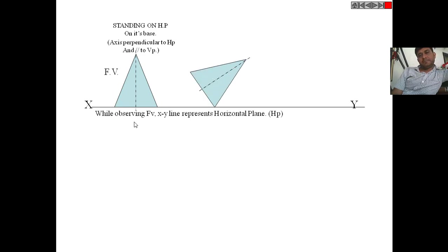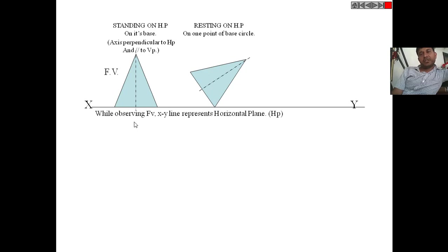If the pyramid is resting on one of its corners of the base, and the axis is inclined to HP and parallel to VP, then its front view will look like slant triangular faces.